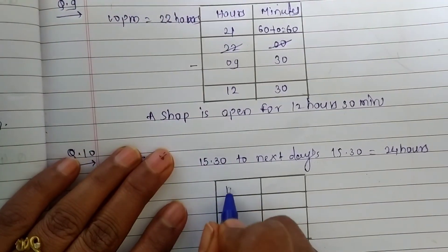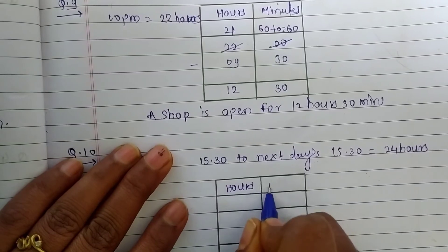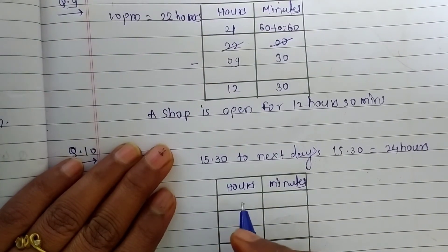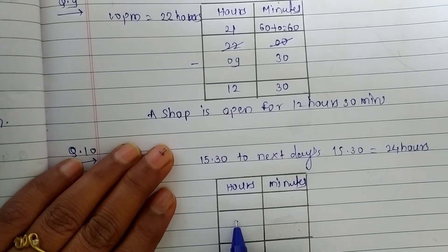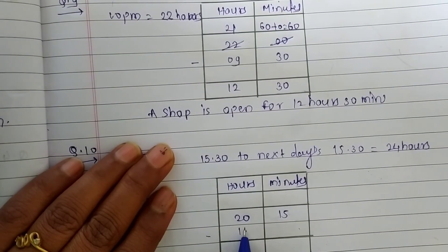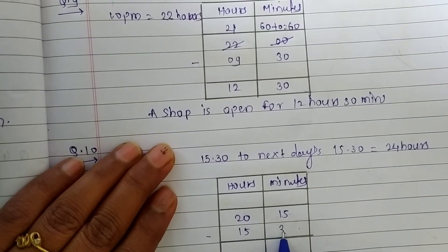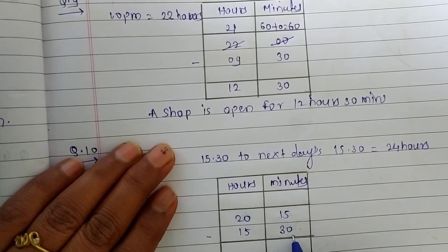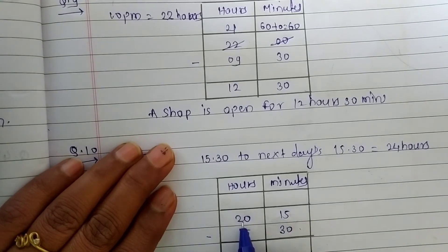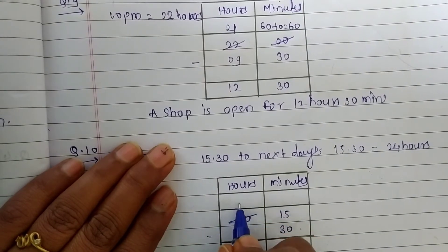Now, write here hours and minutes. Look, 20 hours and 15 minutes minus 15 hours and 30 minutes. Let's subtract it. We can't subtract here 30 from 15. So, write here 19.